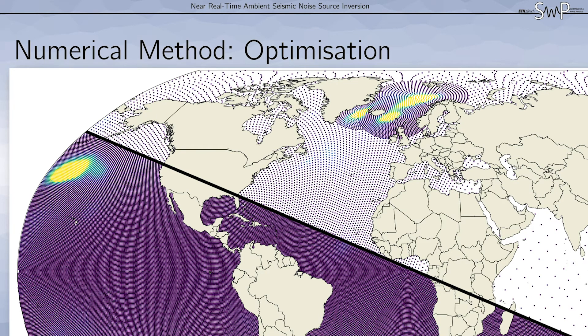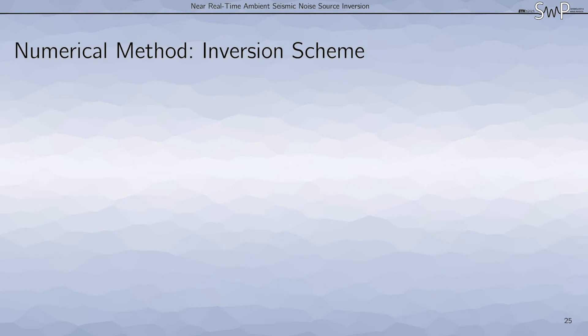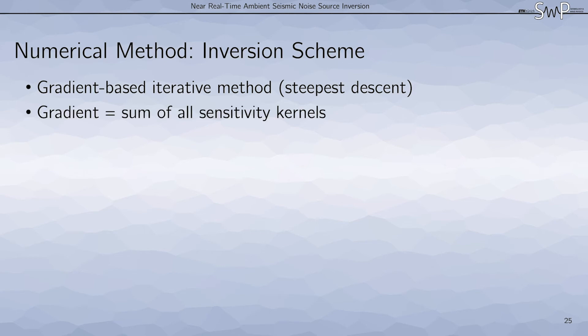Now how do we use all of this to perform an inversion for the source distribution? Our inversion scheme is a gradient-based iterative method, namely steepest descent. The gradient is simply the sum of all sensitivity kernels. That means the gradient tells us where an increase or decrease in source strength will decrease the misfit for all station pairs.